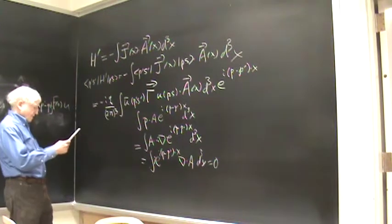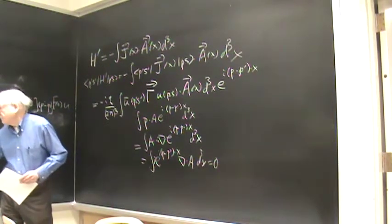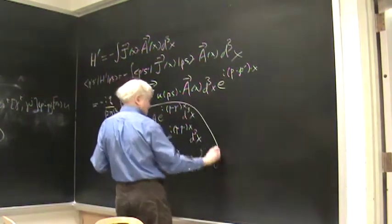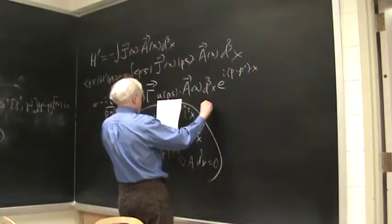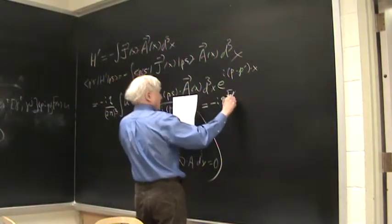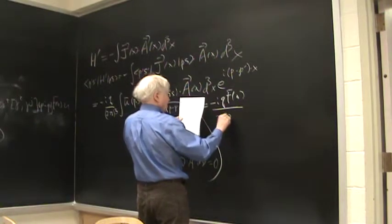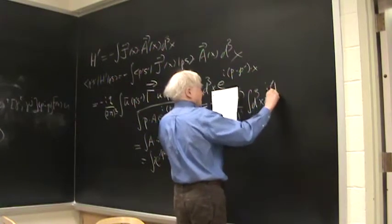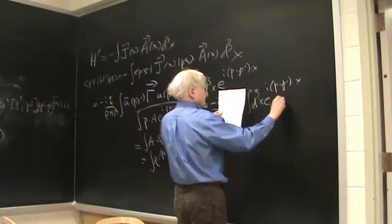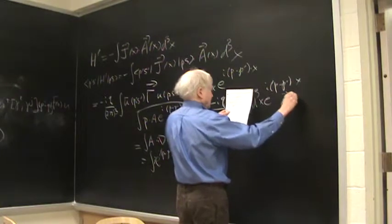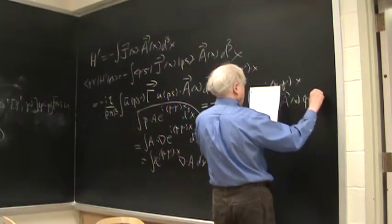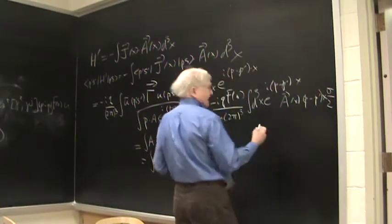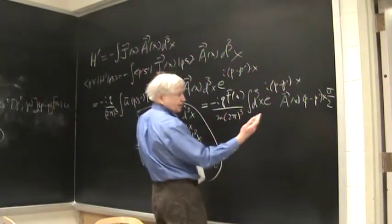Ok so what we do now is we just keep this term and so this thing is, skipping this, what we get then is minus iq f of 0 over m 2 pi cubed integral d cubed x e to the i p minus p prime dot x a of x dot p minus p prime cross sigma over 2 s prime s.